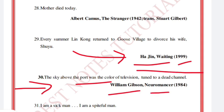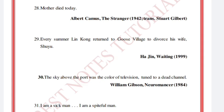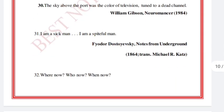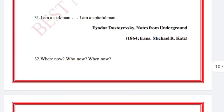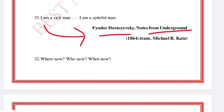'I am a sick man. I am a spiteful man.' Fyodor Dostoevsky, Notes from Underground, 1864.